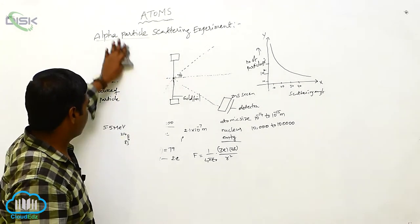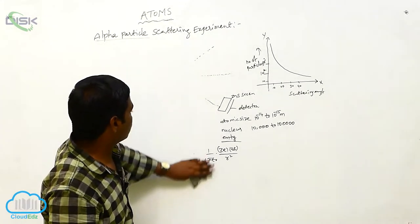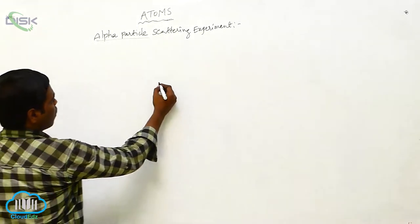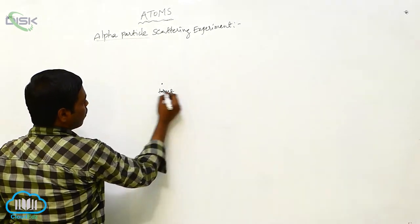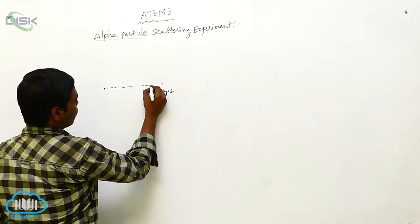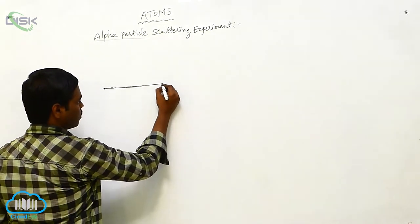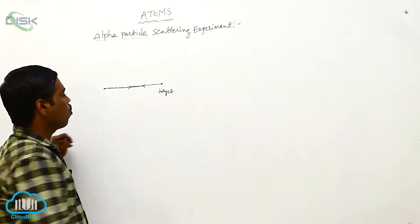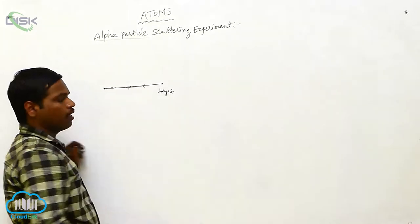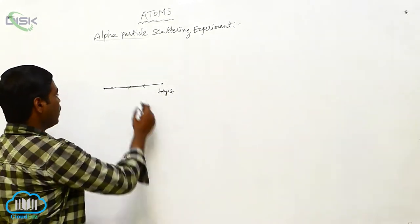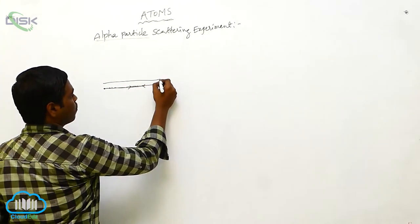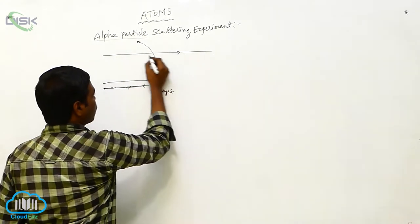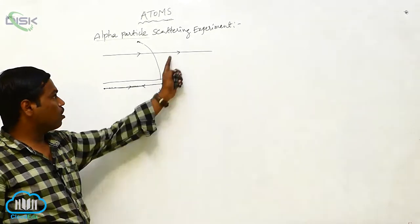If we take the alpha particle trajectory, we can observe the path of alpha particles. Here, the alpha particles are moving from a source toward a target. Some collide with the target and come back in the same direction. Most of the atom is empty, so some particles scatter at an angle and some pass through with no scattering angle.